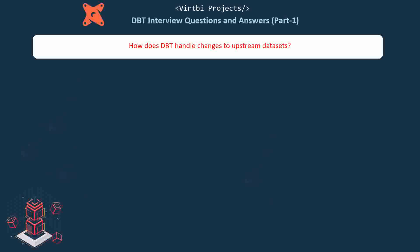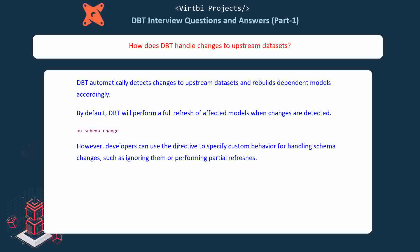How does dbt handle changes to upstream datasets? dbt automatically detects changes to upstream datasets and rebuilds dependent models accordingly. By default, dbt will perform a full refresh of affected models when changes are detected. However, developers can use the on_schema_change directive to specify custom behavior for handling schema changes, such as ignoring them or performing partial refreshes.